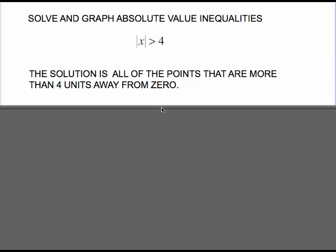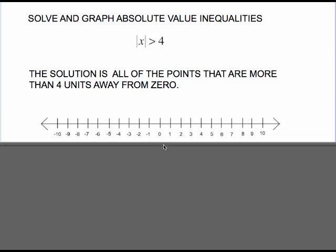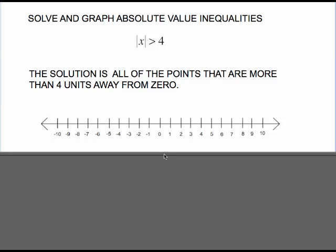Take a look at absolute value of x greater than 4. Absolute value just refers to the distance a number is from zero. This is asking me for what numbers are more than four units away from zero. Our solution will be all of the points that are more than four units away from zero. Well what numbers are those?